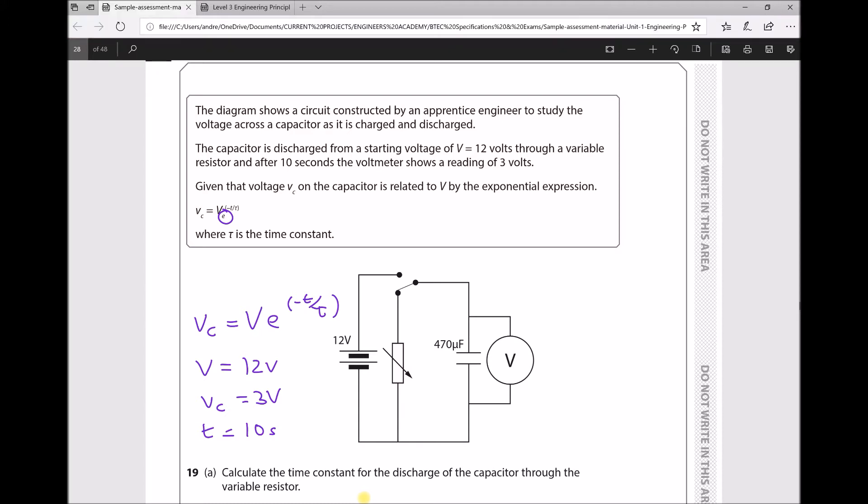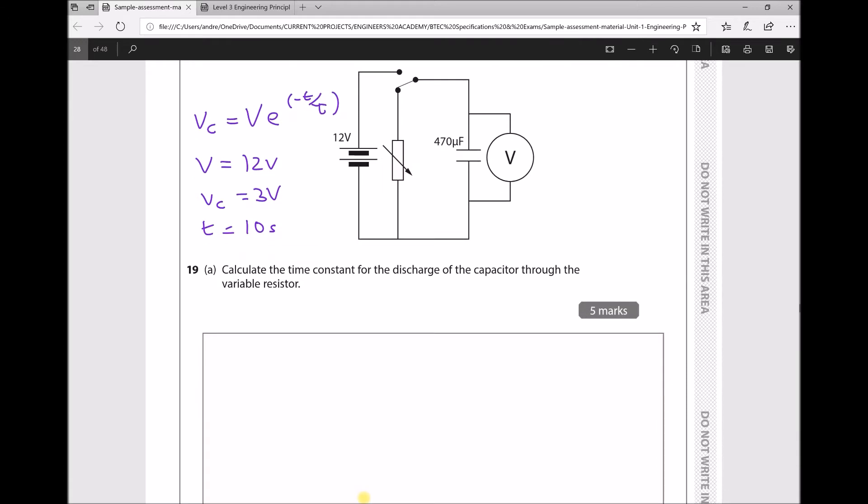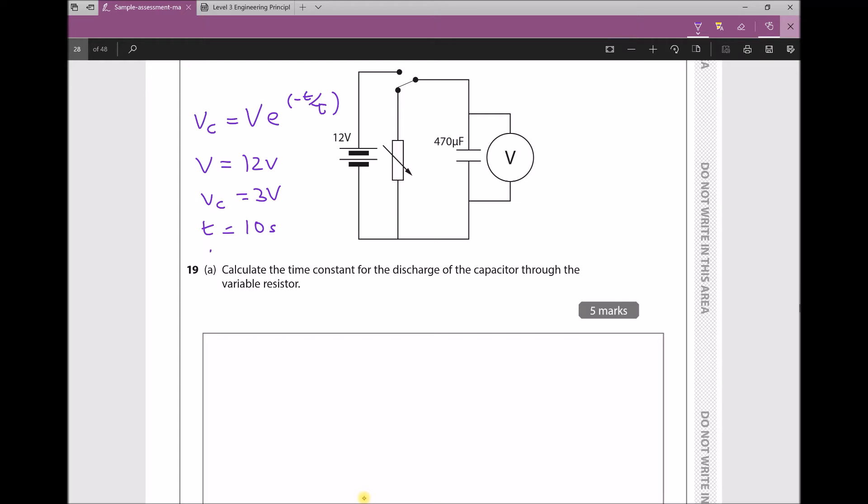Now let's look at how we would calculate our time constant. Recall that the thing we're trying to find here is tau. In fact, we can add it to our list of variables: tau equals question mark.